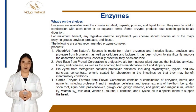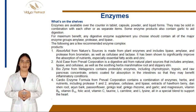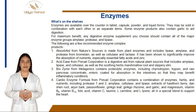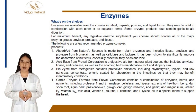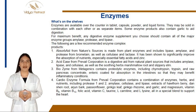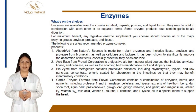The following are a few recommended enzyme complex products. Absorb Aid from Nature's Sources is made from plant enzymes and includes lipase, amylase, and protease from bromelain, as well as cellulase and lactase. It has been shown to significantly improve the absorption of nutrients, especially essential fatty acids and zinc.